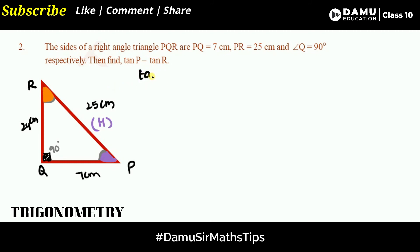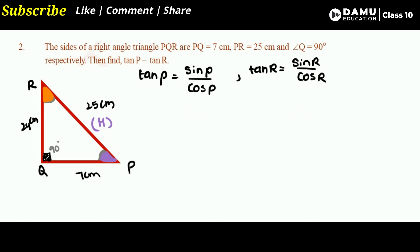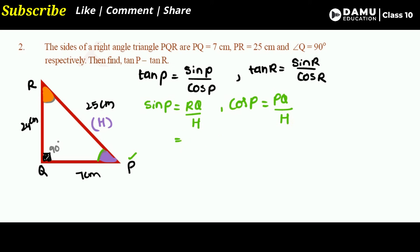For the second method, tan P can be written as sine P divided by cosine P, and tan R as sine R divided by cosine R. Sine P equals opposite side by hypotenuse, which is RQ divided by PR, so 24 by 25. Cosine P equals adjacent side by hypotenuse, which is PQ by PR, so 7 by 25.